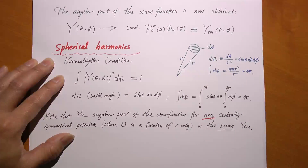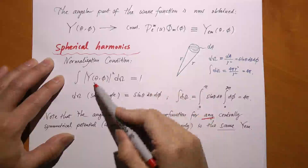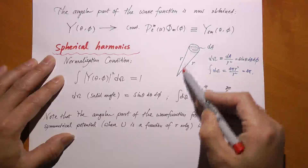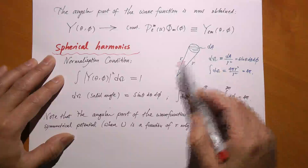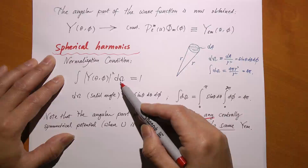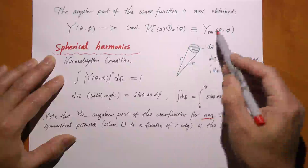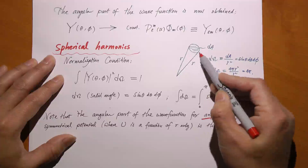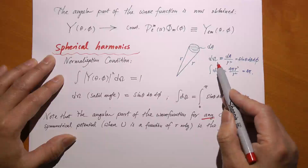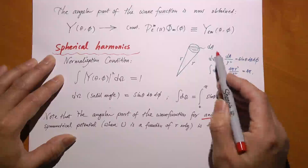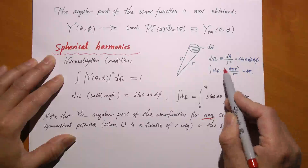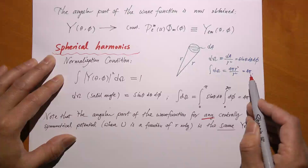The spherical harmonic functions are the angular part of the wave function. They must be normalized: the integral of the absolute value squared of Y times d-omega equals one. The solid angle element d-omega is defined as the area dA on the surface of a sphere divided by r squared. If you integrate d-omega over the entire sphere, you get 4 pi r squared divided by r squared, so the total solid angle is 4 pi. In spherical coordinates, d-omega equals sine theta d-theta d-phi.